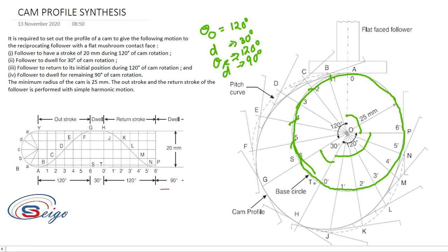After the dwell, for the theta return stroke of 120 degrees, again divide this 120 degrees into six equal divisions, labeling them zero-dash, one-dash, two-dash, three-dash, four-dash, five-dash, and six-dash.